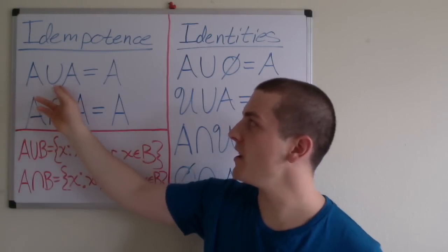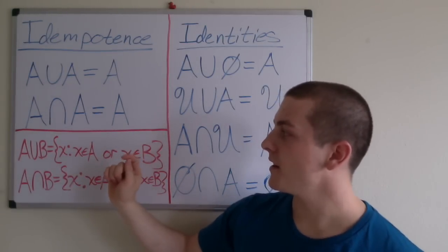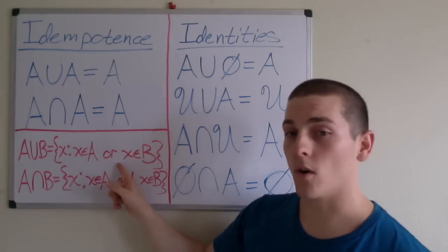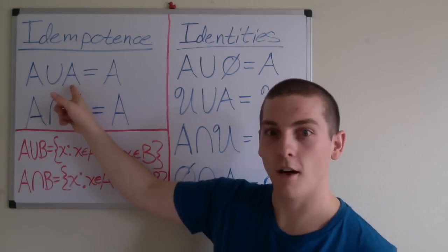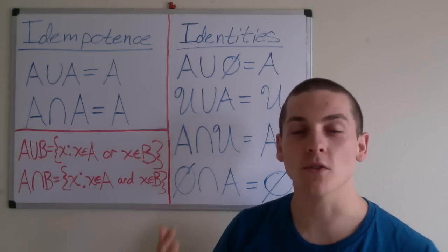it should be clear that A union A equals A because A union A is defined as the set containing elements x such that x is an element of A or x is an element of A. You should see why that equals the set A.